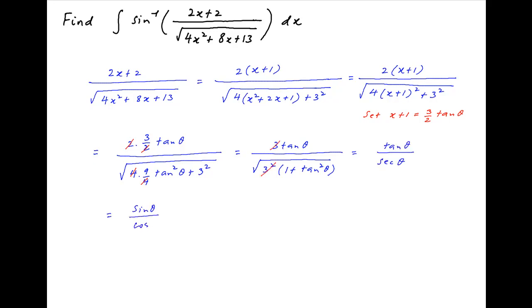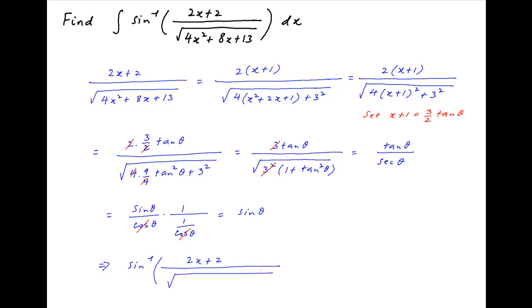This simplifies to tan θ upon sec θ, which is equal to (sin θ / cos θ) multiplied by cos θ, and therefore the value of this expression is equal to sin θ. In other words, sin inverse of (2x plus 2) divided by square root of (4x squared plus 8x plus 13), which is the integrand of the given integral, is equal to θ.